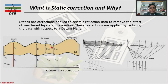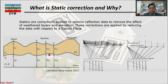Let's say your source and receivers are here — source on top and receivers at the bottom. Once your surface is not straight — meaning somewhere you have undulating topography, or highs and lows — you will have this type of problem. Even if the surface is flat, if your low velocity zone in the subsurface is undulating, we need to apply this correction. These corrections are applied by reducing the data with respect to a datum plane.